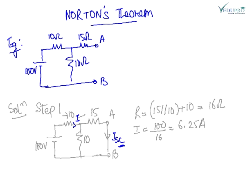I comes out to be, this I is 100 upon 16, it is 6.25. ISC using current division formula, we get to 2.5 ampere.